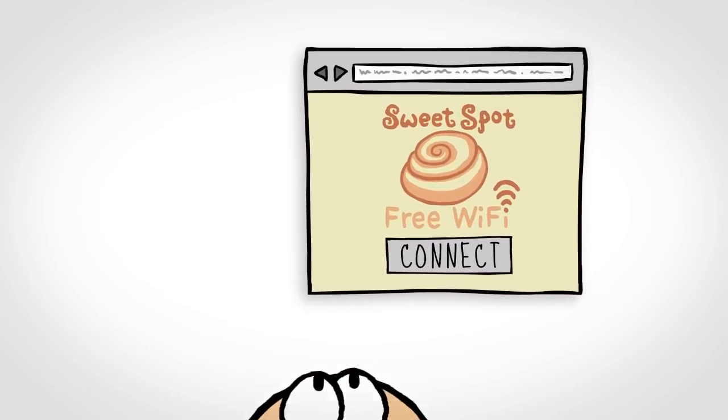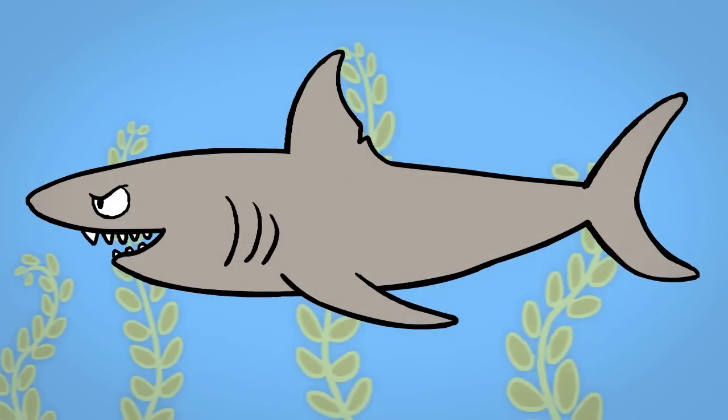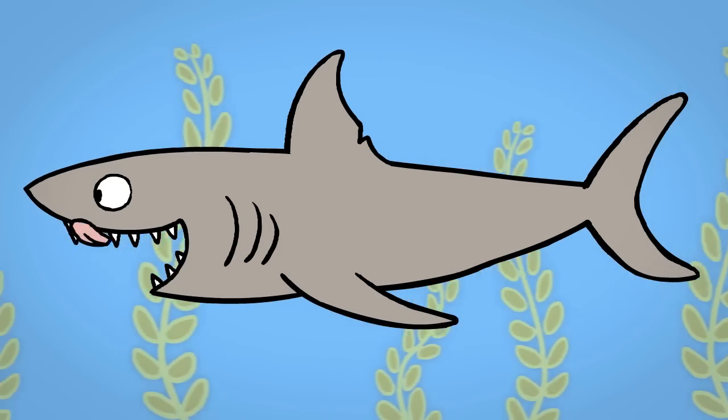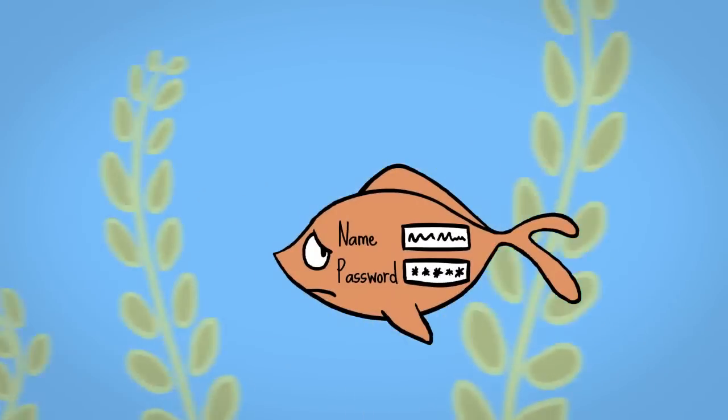Think of an open WiFi network as a big fish tank with lots of data swimming around. And there's no way to know if a big shark is lurking, waiting to make a meal out of your personal information, such as your email address, pictures, or anything else on your computer.